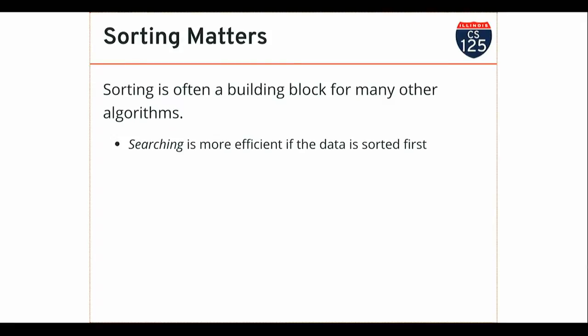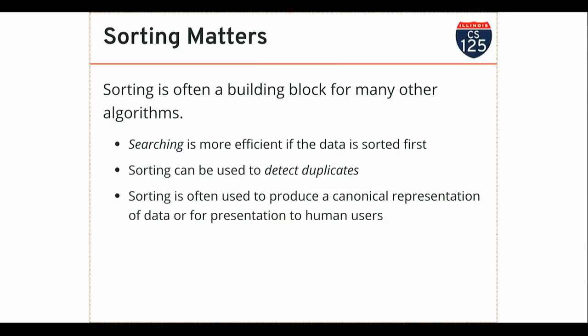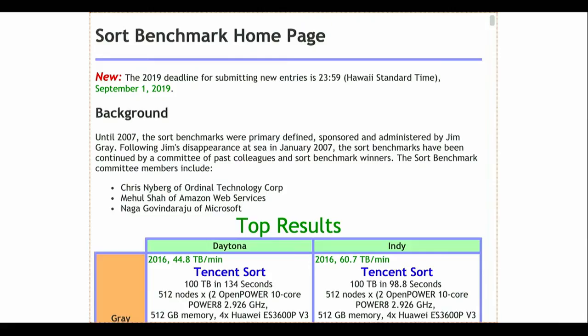I can search more efficiently if data is sorted first. I can detect duplicates by sorting data and looking for them — that's much more efficient. A lot of times you want to see things in a sorted way: sorting lab sections by date and time, sorting songs in your playlist by title, album, or artist. There's a challenge every year called the Sort Benchmark — if you Google 'sort benchmark' you'll find it. Sorting is not a solved problem — there's a competition held annually for algorithms and systems that can sort an enormous amount of data.